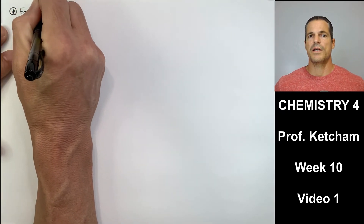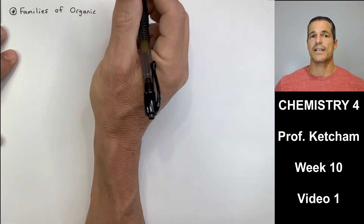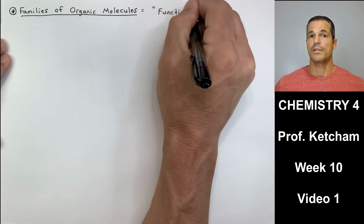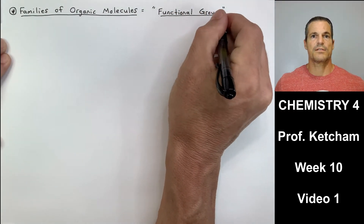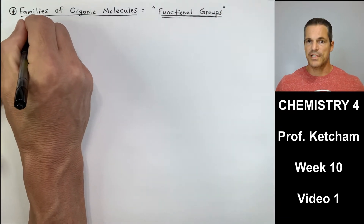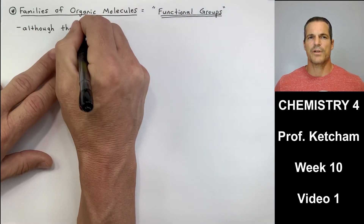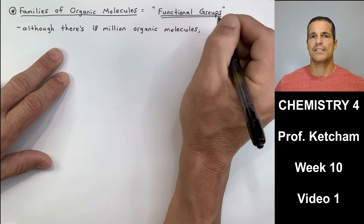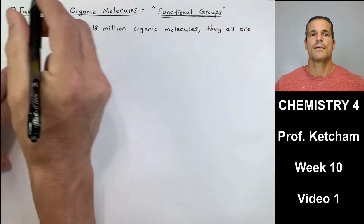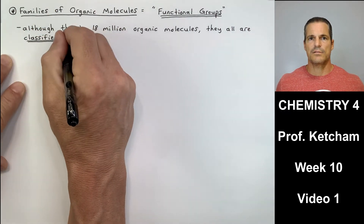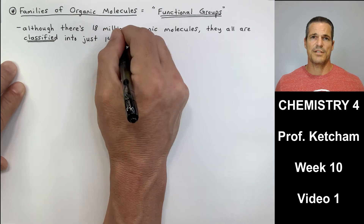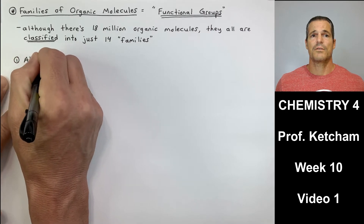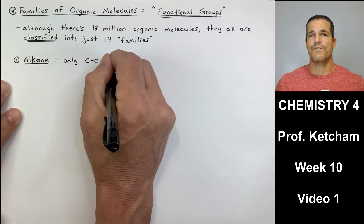Now we start talking about the different functional groups in organic molecules. Organic molecules contain one or more functional groups — kind of like the alphabet. We have thousands of words but only 26 letters. Same with organic molecules: although there are 18 million organic molecules, they're all classified into just 14 families or 14 functional groups.